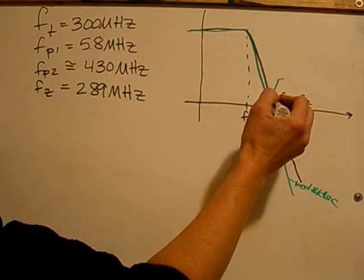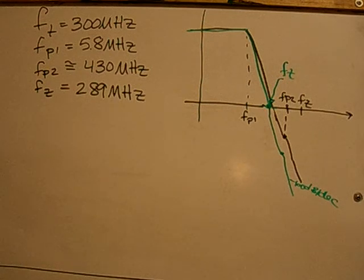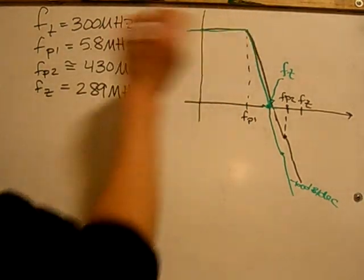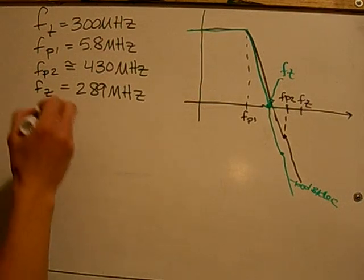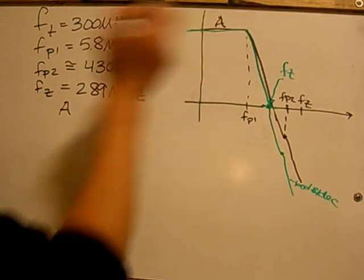So this crossover point, Ft, because it's going to be pretty close, we can still write the overall equation for this Bode plot in the form of the gain, overall gain, which is here A.